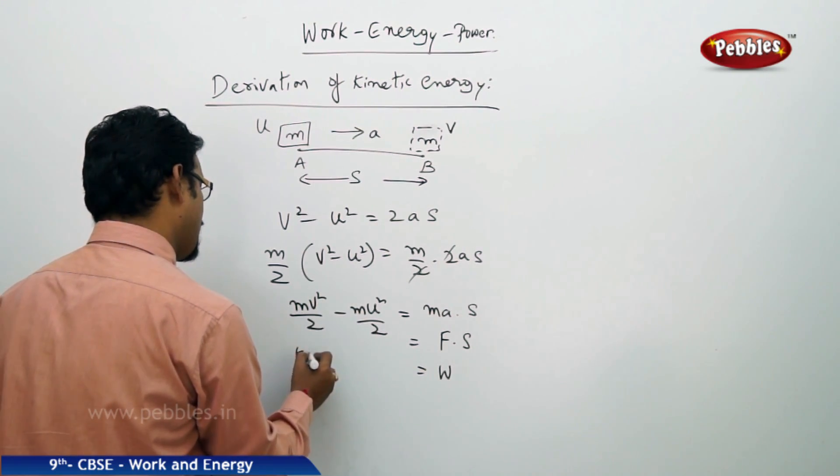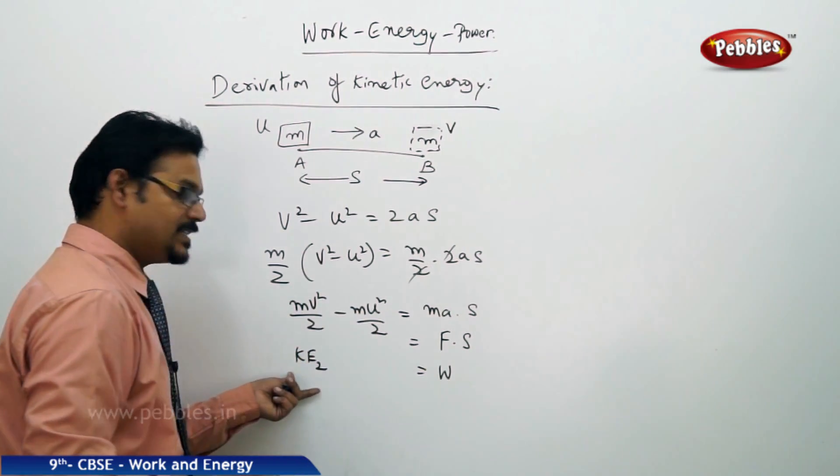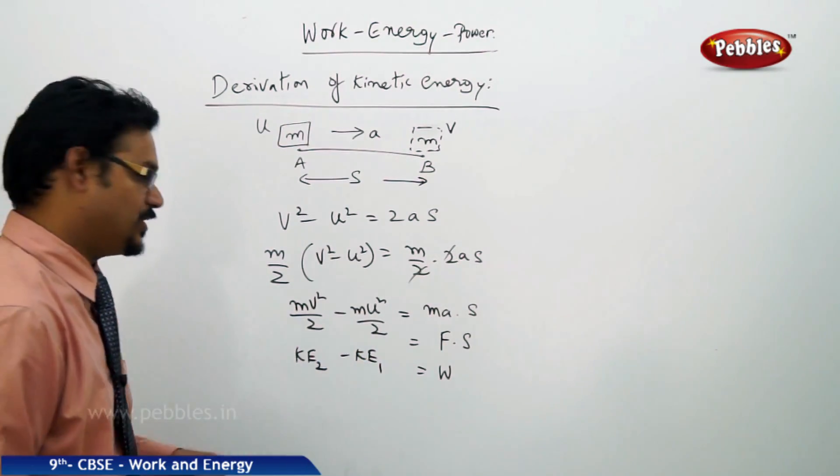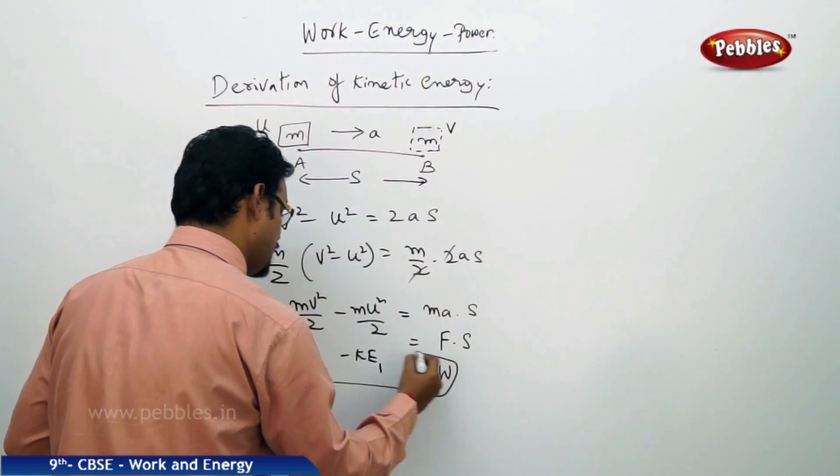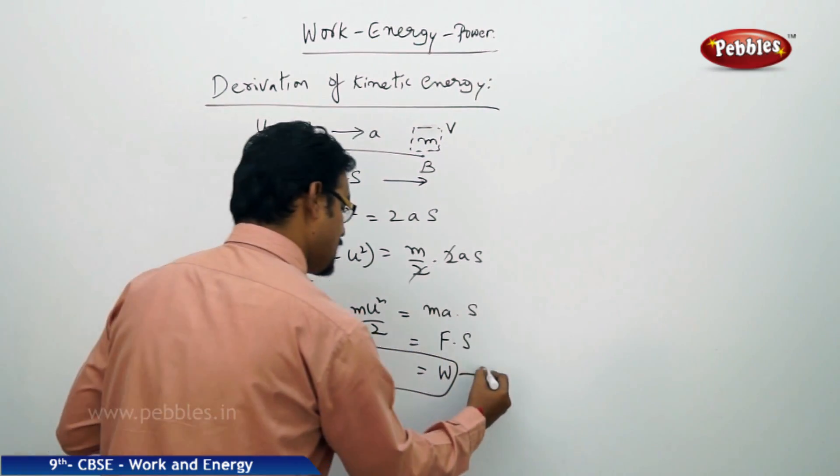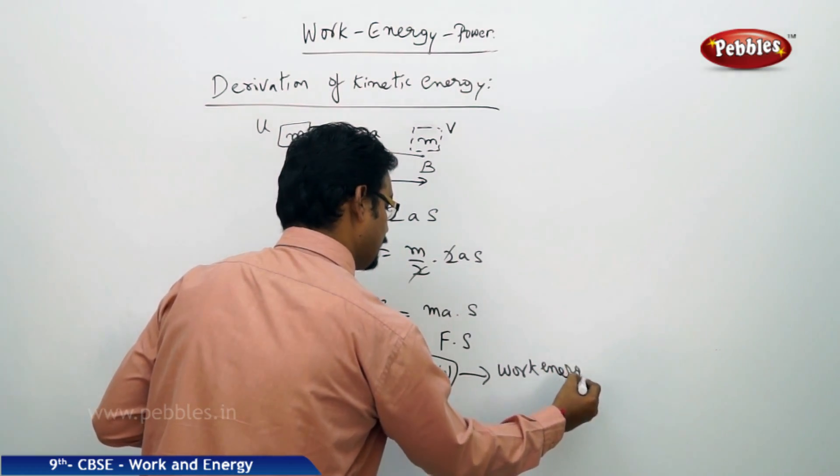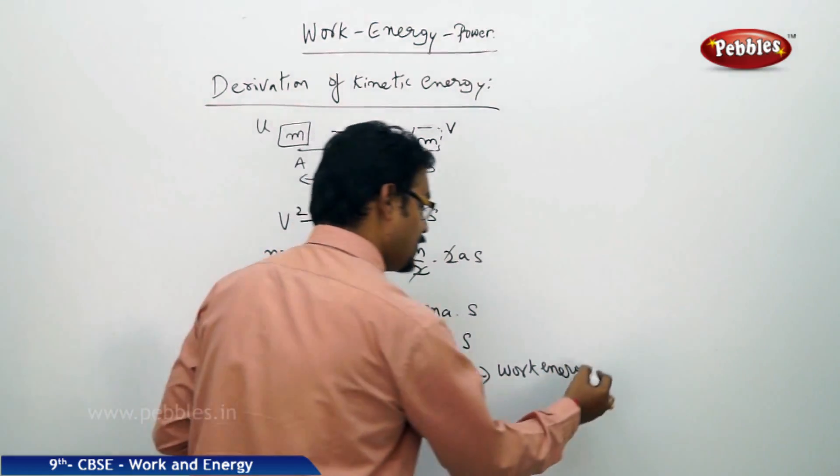Now it's coming to here: mv squared by 2 which is called KE2 kinetic energy final minus KE1 kinetic energy initial. So this form if you see it is called work energy theorem.